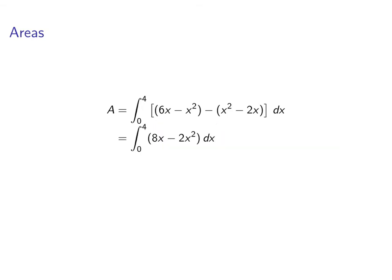Okay, if we put this together, clean it all up, integral from 0 to 4 of 8x minus 2x squared. Alright, this is a pretty easy integral to evaluate. We just get 4x squared minus 2 thirds x cubed. That's evaluated from 0 to 4.